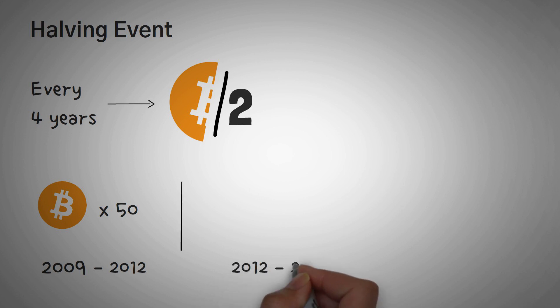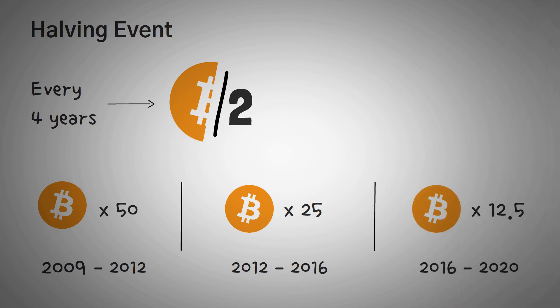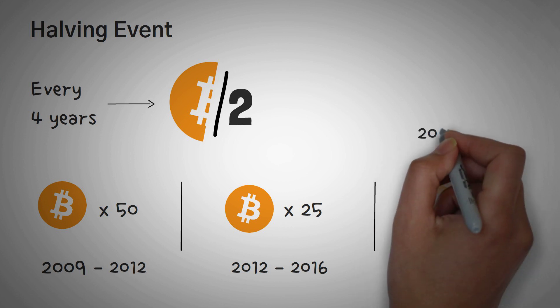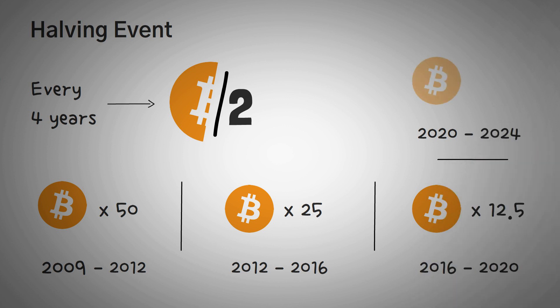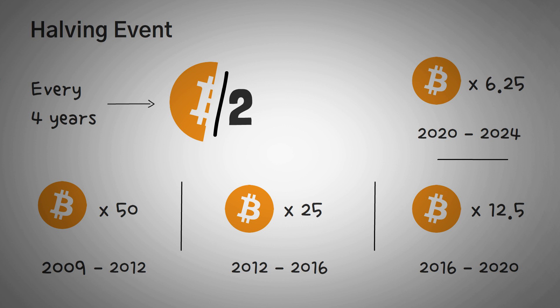Then from 2012 to 2016, the reward for solving the problem was 25 Bitcoins. And then from 2016 to 2020, the reward for solving the Bitcoin problem was 12 and a half. And now, since 2020 all the way to 2024, the reward will be 6.25 Bitcoins per block.